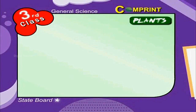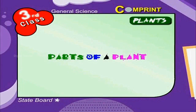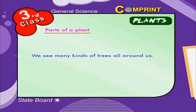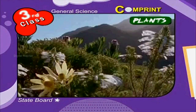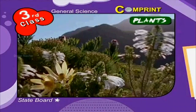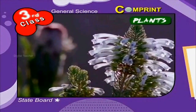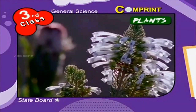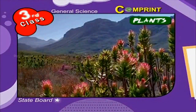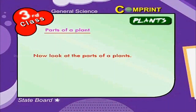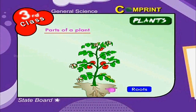Plants and animals. Parts of a plant. Children, we see many kinds of trees all around us. Their shapes and sizes are all different. We get different flowers, fruits and vegetables from these plants. Now look at the parts of a plant. We see roots, stem,